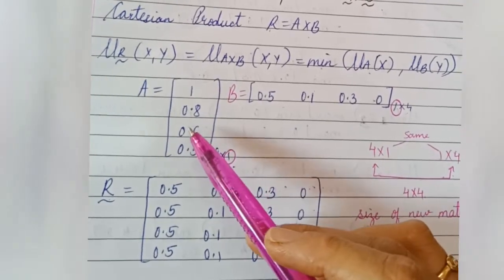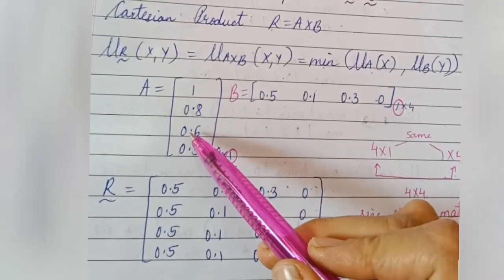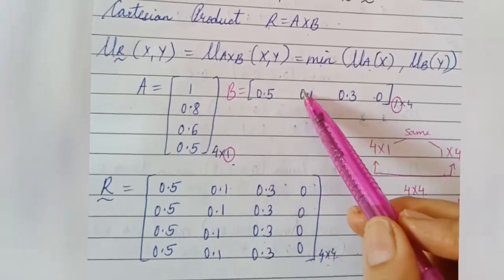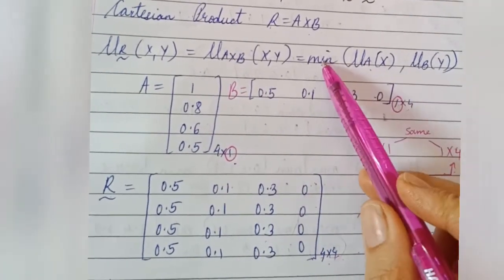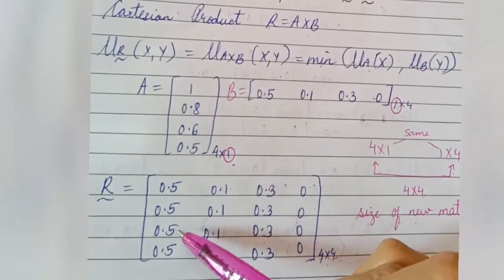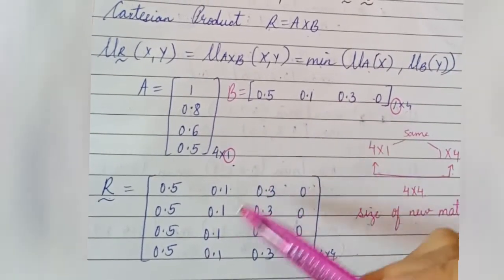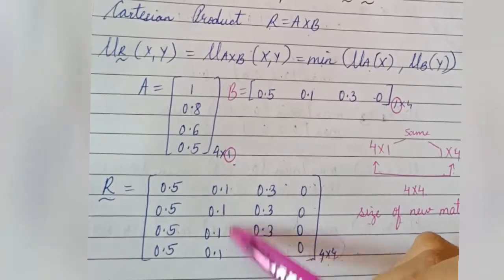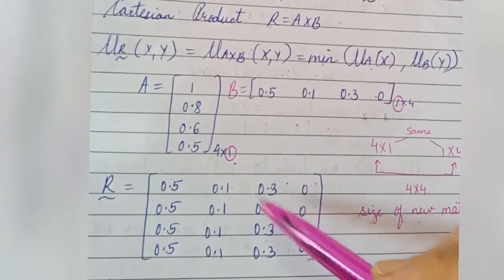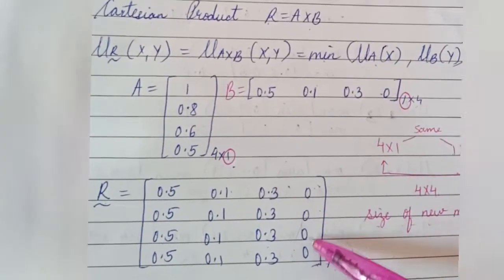For the third row, select the third element from set A and compare with each element from set B, selecting the minimum. 0.6 and 0.5 → minimum is 0.5; 0.6 and 0.0 → minimum is 0.0; 0.6 and 0.3 → minimum is 0.3; 0.6 and 0 → minimum is 0.